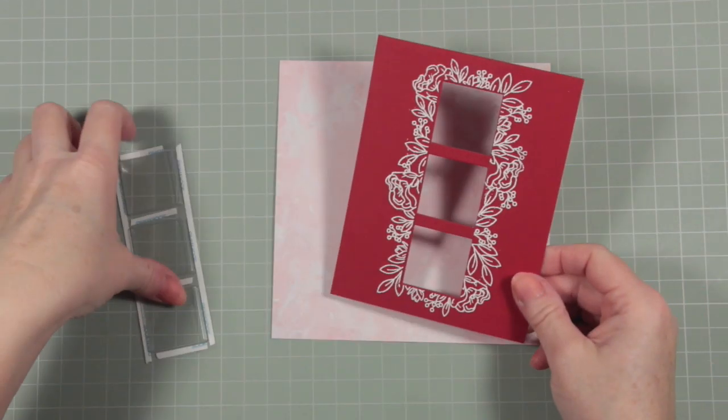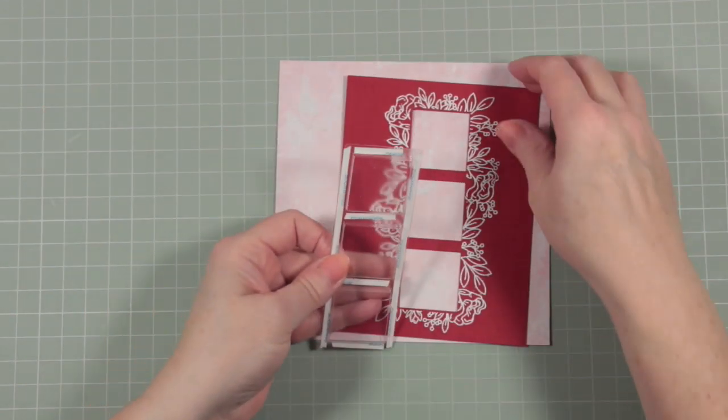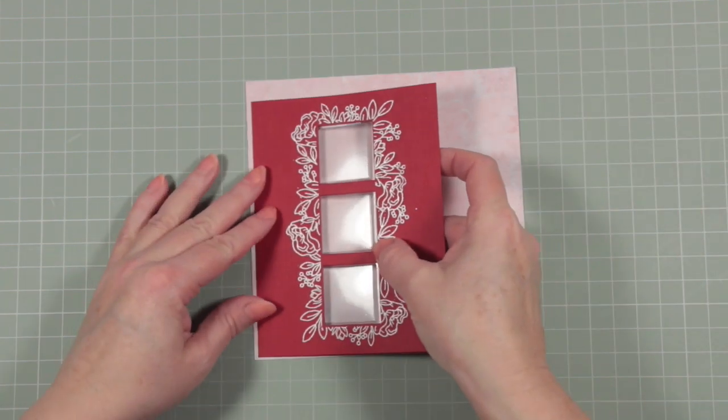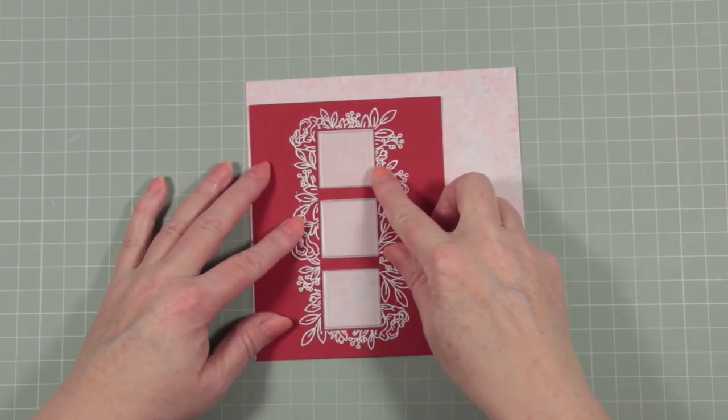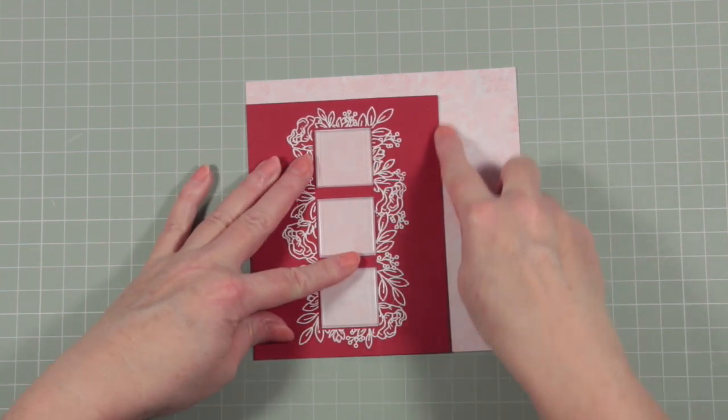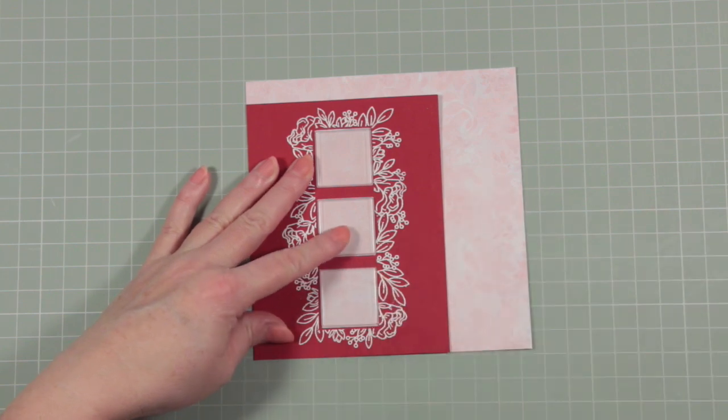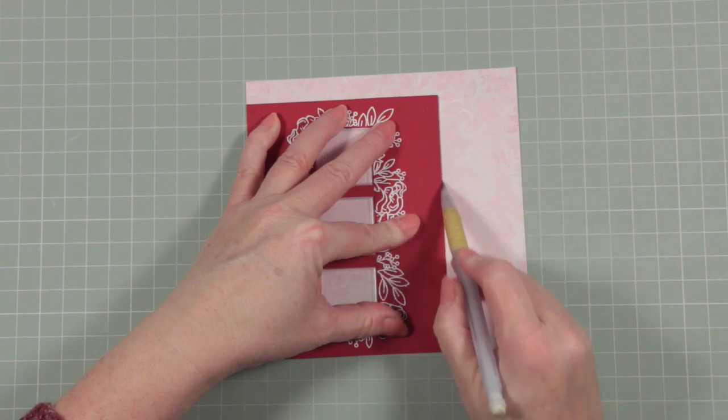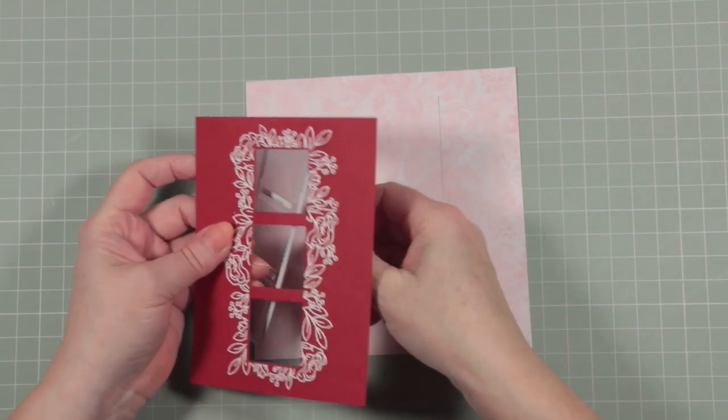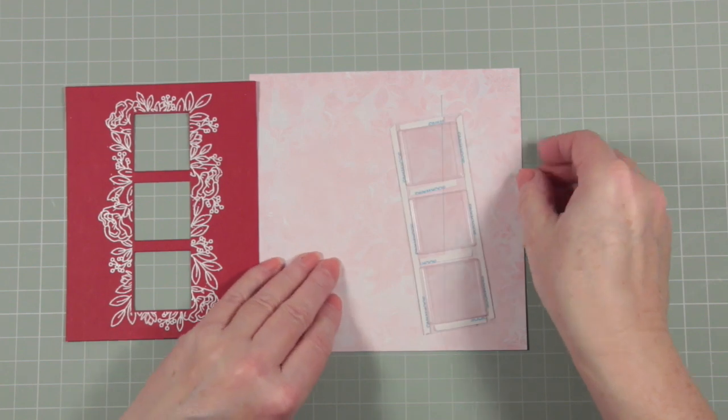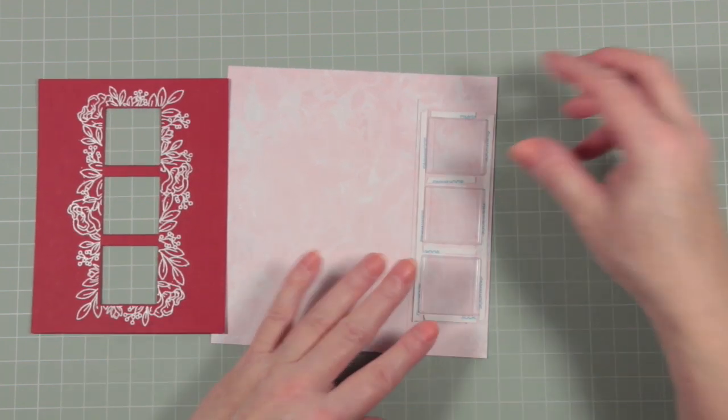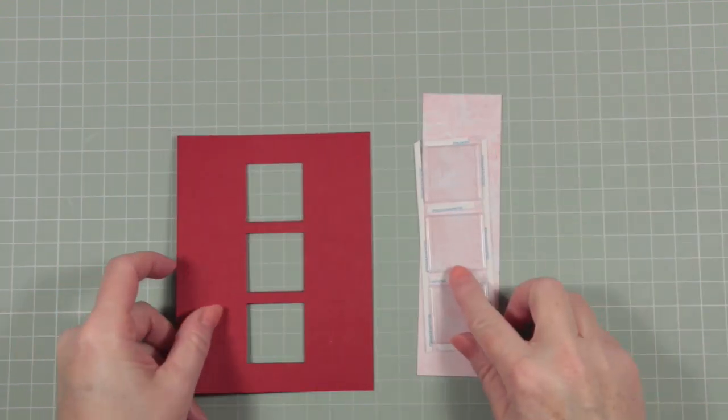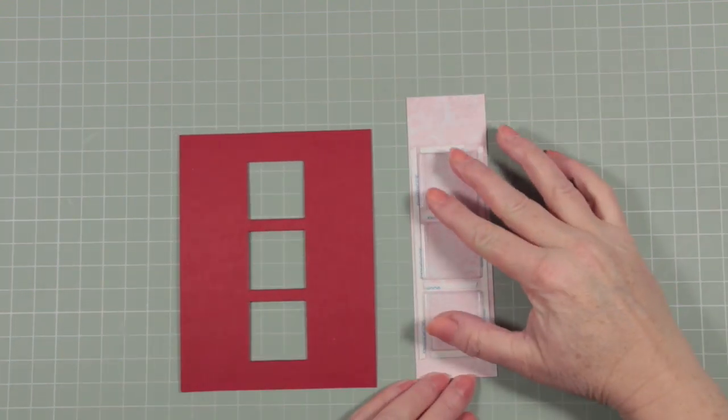Our score tape is going to be really helpful here because it's only one eighth of an inch wide. It's the perfect shape for fitting into our windows and helping us glue them into position. My score tape is now all in the right place and it's going to fit on the inside of my card like this.